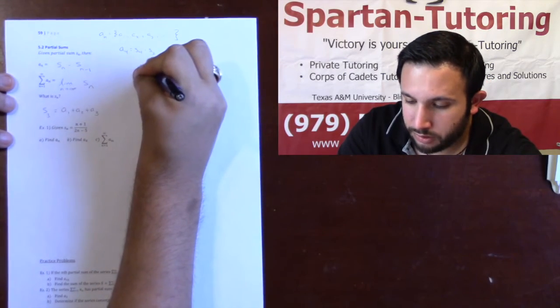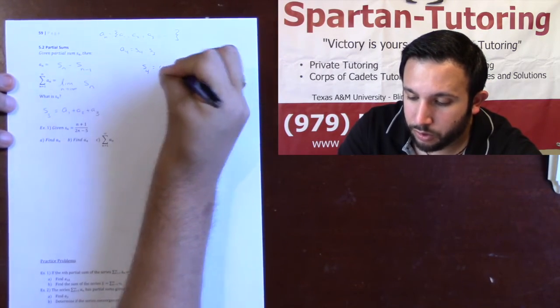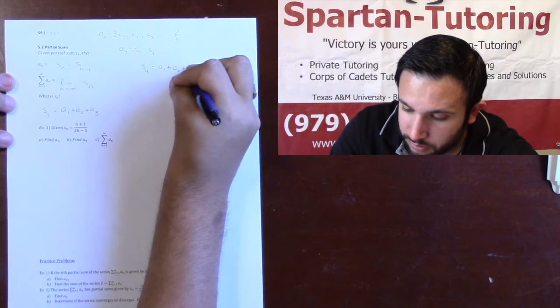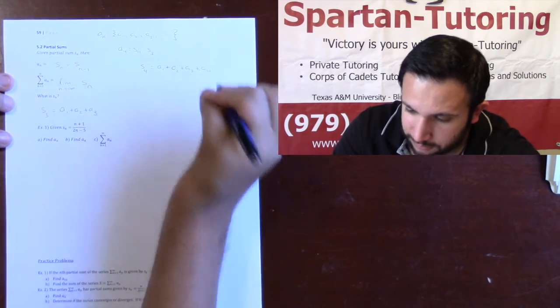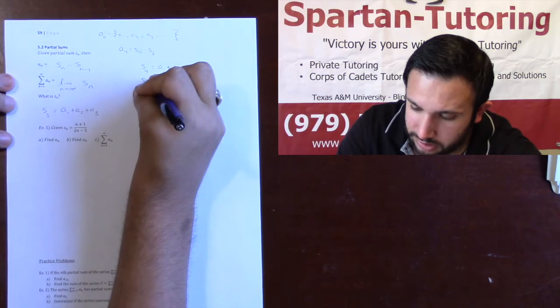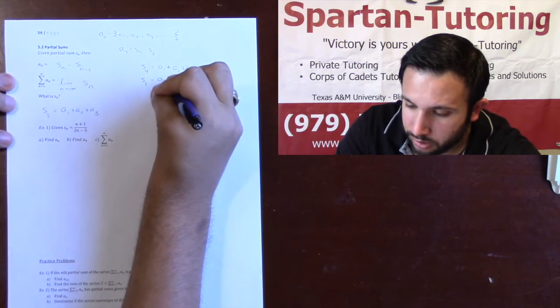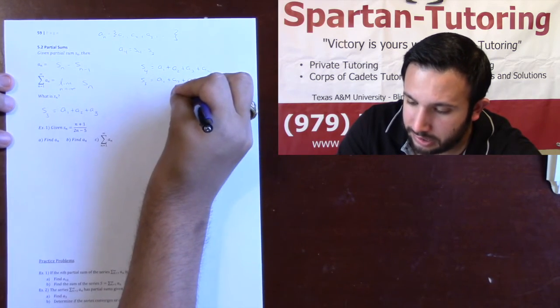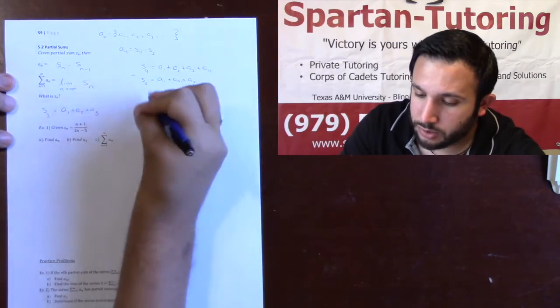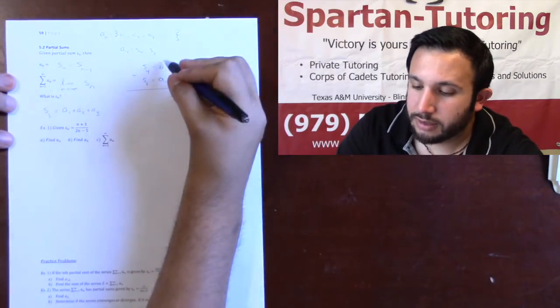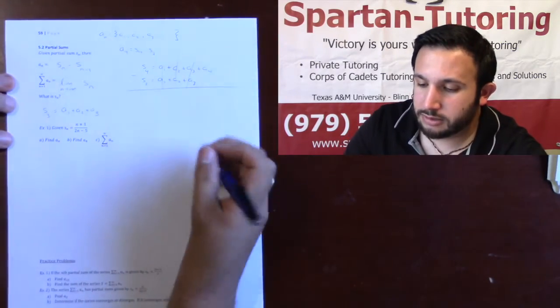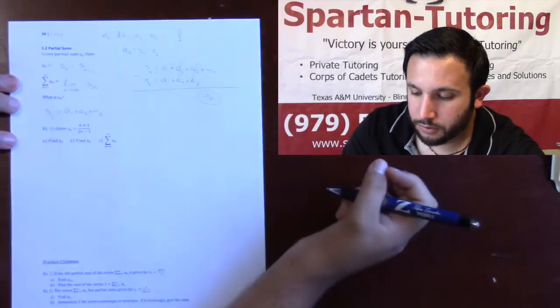What is S4? S4 would be A1 plus A2 plus A3 plus A4. What's S3 equal to? S3 is A1 plus A2 plus A3. So whenever I subtract these two partial sums, these are all going to cancel. And guess what you're left with? A4.